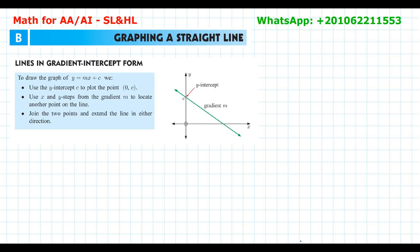First of all, how do you graph a line, or a linear equation, or linear function? We have more than one method. The first method uses the gradient-intercept form. If you have the equation y = mx + c, you first identify the y-intercept c, which could be positive or negative. Then you plot the y-intercept as the first point, which is (0, c) — for example (0, 2) — where x equals 0.